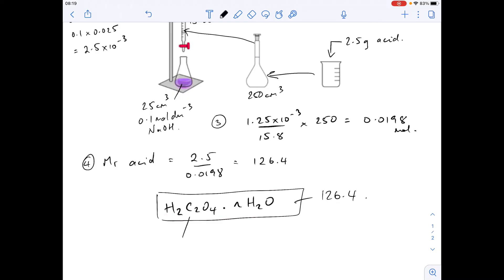We're going to subtract the mass of this part because we know the formula of that bit. Now the mass of that is 90, or the MR of that is 90. So the N waters must be equivalent to 126.4 minus 90, which is 36.4. So that's for the N·H₂O part.